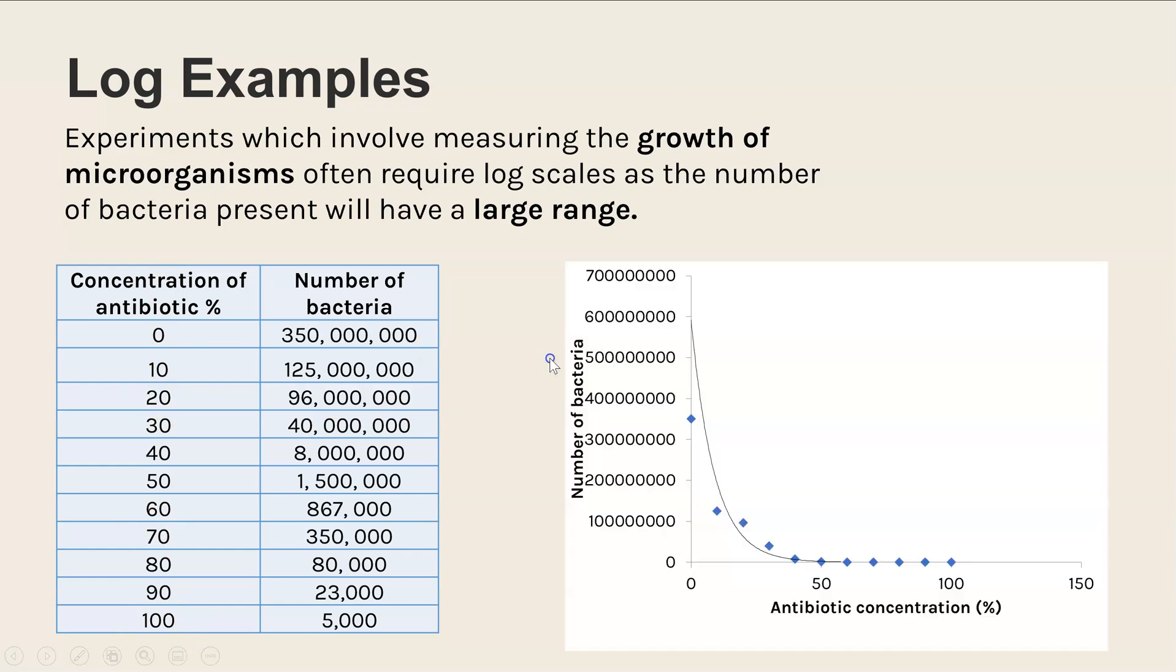If we were to plot this data, this is the graph we would get. We have antibiotic concentration against the number of bacteria. Because there is such a huge range, we have increments on the graph that are really large as well. The issue with having such large increments on the scale is when you get some of the smaller values, which actually aren't even that small, they're just comparatively small, it looks like they're at zero when they are not. It's just the scale has such huge increments that's how it appears.